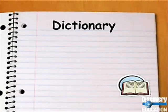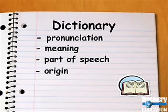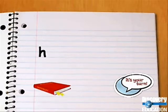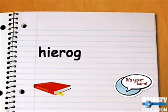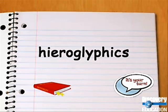When you look up a word in the dictionary, you can learn the pronunciation and meaning of a word, the word's part of speech, and its origin. Look up this word in the dictionary: hieroglyphics (H-I-E-R-O-G-L-Y-P-H-I-C-S). Find out how to pronounce the word and what the word means. Also find out what part of speech it is and what language it originates from.